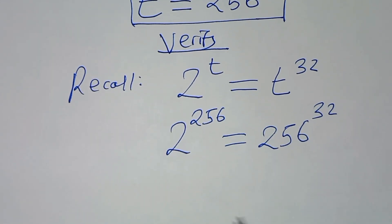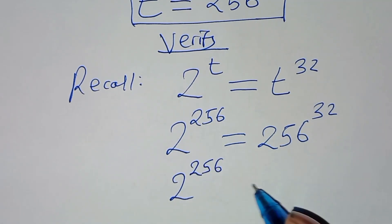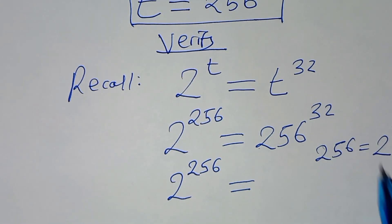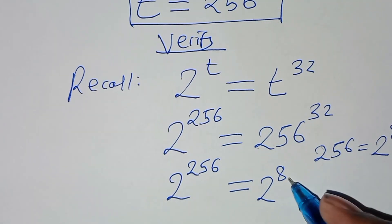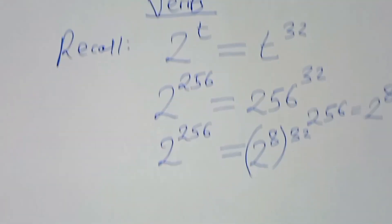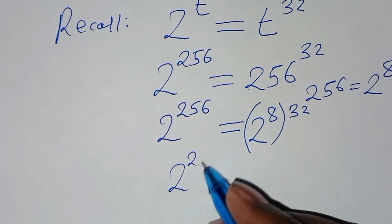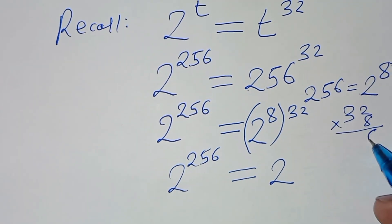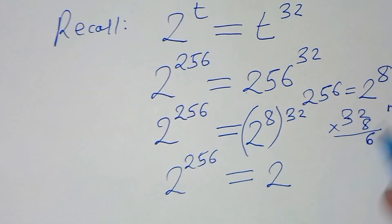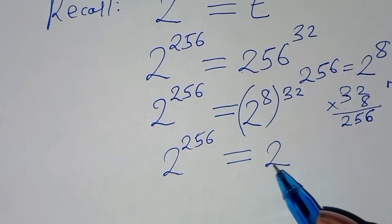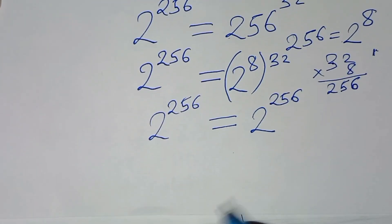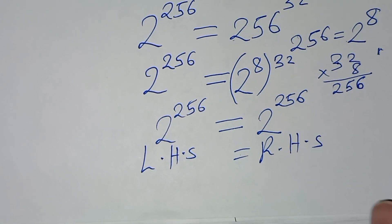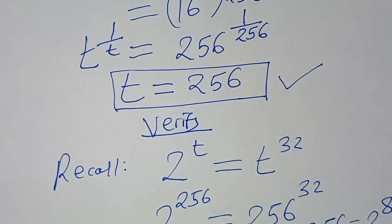The next step: we have 2 to the power 256. On the right side, we can express 256 as 2 to the power 8. Substituting 2 to the power 8, we'll have 2 to the power 8, multiplied by 32. So this gives 2 to the power 256 on the left, equal to 2 to the power 32 times 8 on the right. Now 32 times 8: 8 times 2 is 16, carry 1; 8 times 3 is 24, plus 1 is 25 — giving 256. So we have 2 to the power 256 equals 2 to the power 256. Therefore, the left-hand side equals the right-hand side, confirming that t equals 256 satisfies the equation.